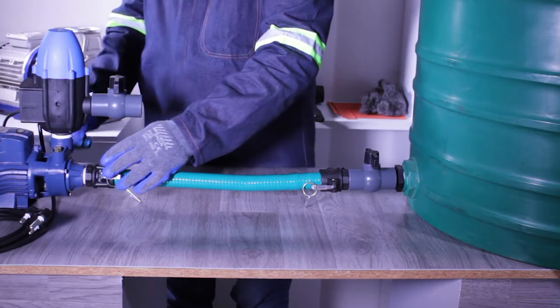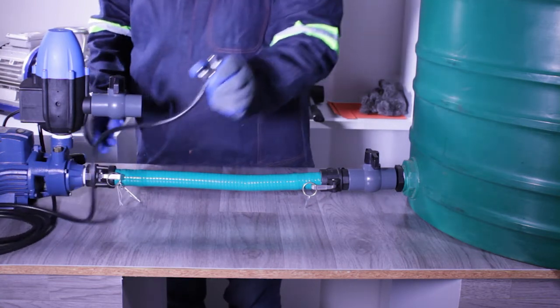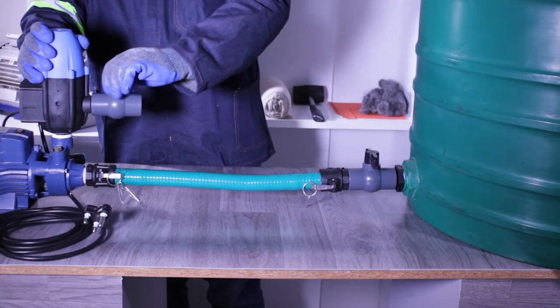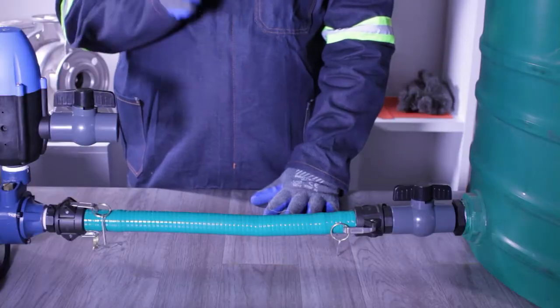The power source can now be connected and the discharge line ball valve opened. Now the unit should start automatically.